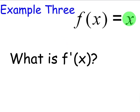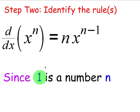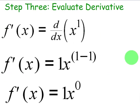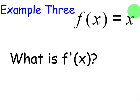Next example: f(x) = x. What is f′(x)? Although this doesn't actually have a power listed, the power we don't see is 1. So convert to a familiar form: x to the first. Since n is 1, we can use the power rule. Take the derivative of x to the first — take the 1, move it, make it the coefficient, subtract 1 from the original exponent. We get 1·x⁰. Since x⁰ = 1, and 1 times 1 is 1, f′(x) = 1. The derivative of x is always going to be 1.